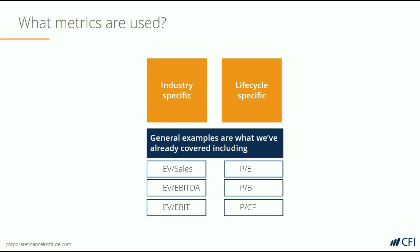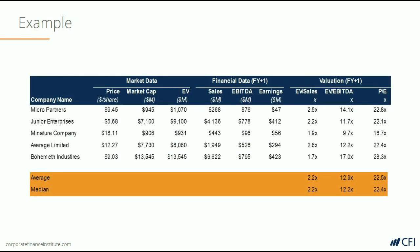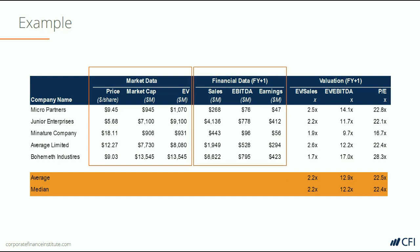Let's look at an example of a comps table that's been completed. Here we have some companies listed on the left. The company names are followed by market data, which includes the company's share price, its market capitalization, and its enterprise value. That's typically followed by financial data, which includes what we need for the ratios — revenue or sales, EBITDA, and earnings in this example. We then take the numerator, which is the market data, divided by the denominator, which is the financial data, to get our valuation ratios. Below that you'll notice there's an average and a median, which are likely what will be used to value the company in question.